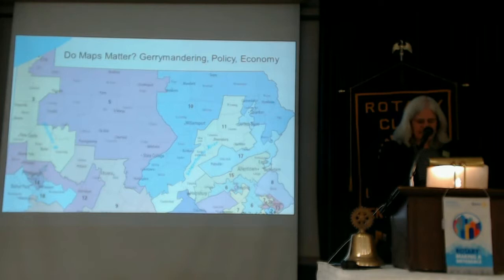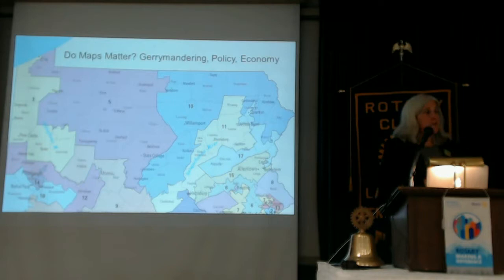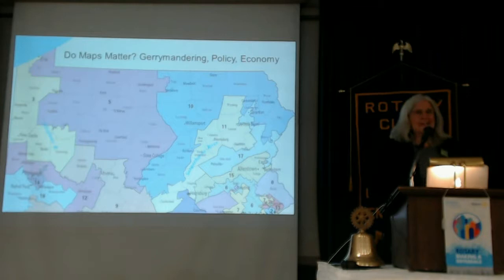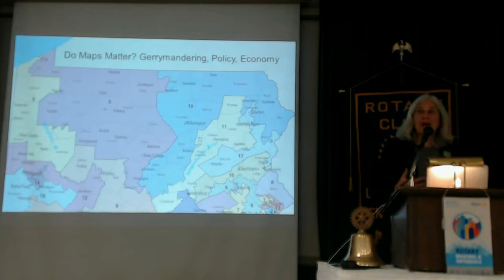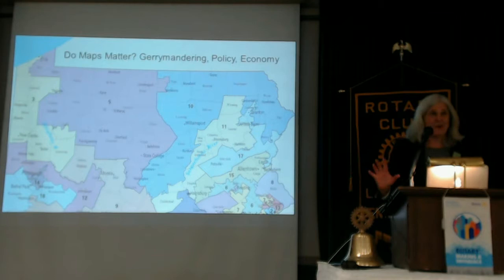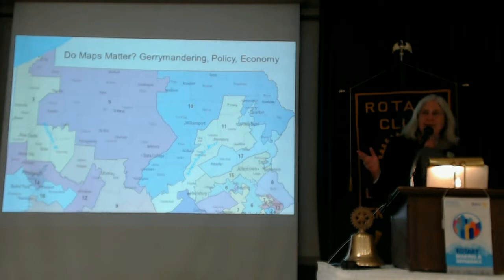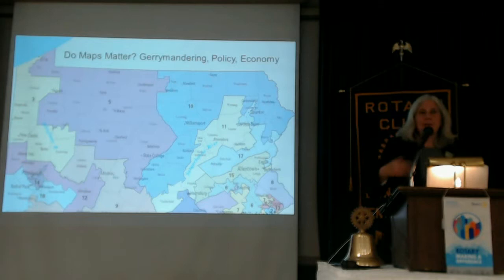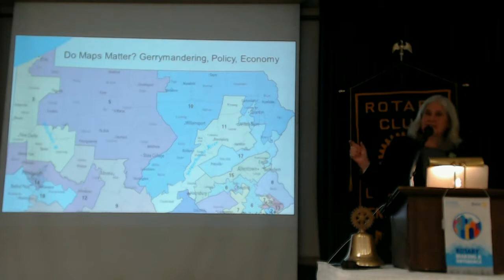This brings us to our third word: gerrymandering. Gerrymandering is the manipulation of those maps for advantage — for partisan advantage for your party, or for personal advantage for particular people. In Pennsylvania, it's always both. The use of the name came from Elbridge Gerry, governor of Massachusetts. In 1812, a map was drawn to benefit his party, the Democratic Republicans. They drew a map that looked like a salamander to keep their party in power in Massachusetts. Elbridge Gerry signed it, and somebody coined the term 'gerrymander.' That term has been around ever since.